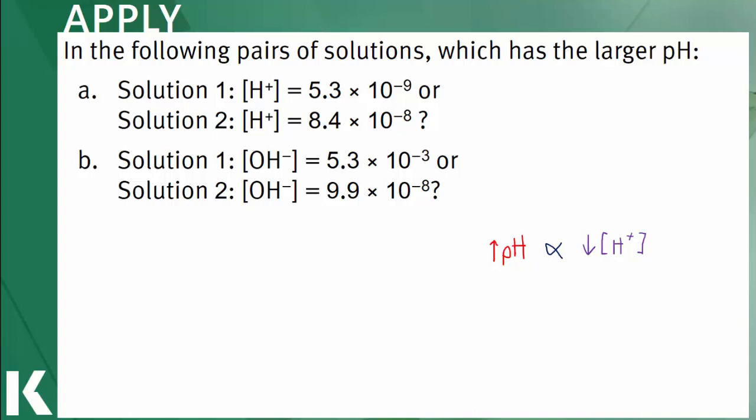In A, solution 1 has a lower concentration of hydrogen ions compared to solution 2, as indicated by the more negative or smaller exponent value. This means that solution 1 has a higher pH compared to solution 2.